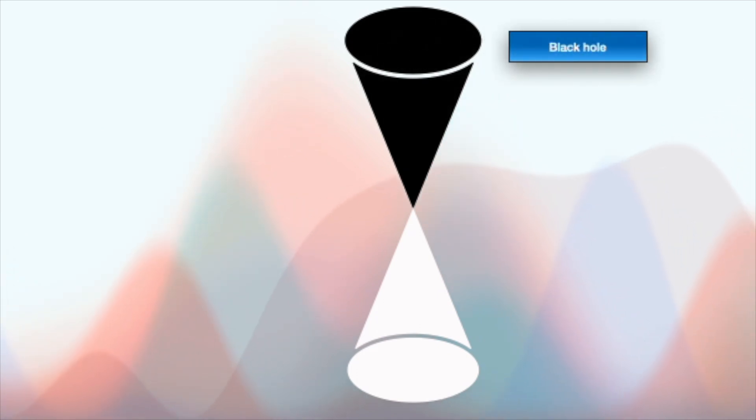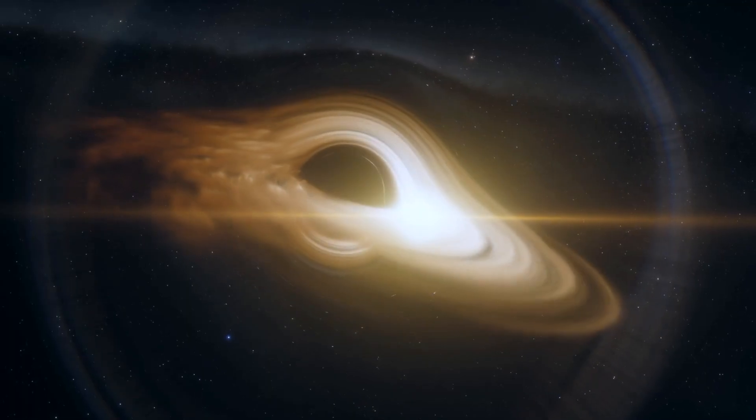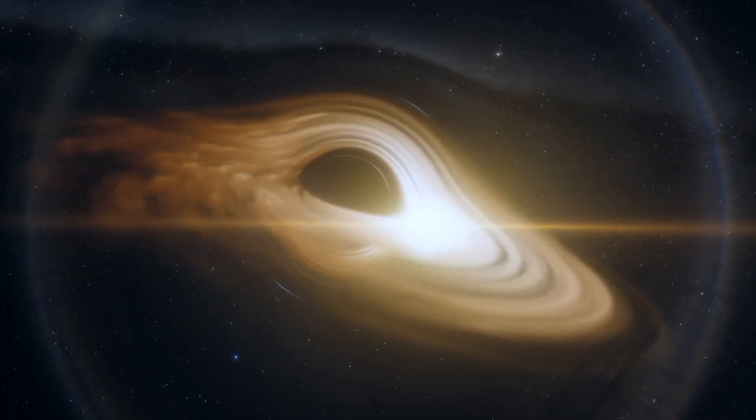Some physicists propose that the black hole singularity could be connected to a white hole, a hypothetical region where matter and energy are continuously spewing out. According to this hypothesis, our expanding universe could be the result of matter and energy flowing out from a white hole connected to a black hole singularity.